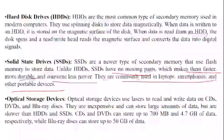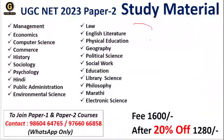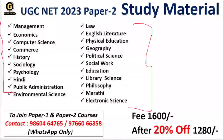Yesterday and today we have completed the full topic of memory — primary and secondary. There are many questions on memory, and we will take MCQs on this. Global Online also provides Paper Two study material for various subjects available on the Global Online app. The fee is Rs. 1600 with a 20% discount, bringing it to Rs. 1280. That's all for today — see you day after tomorrow with a new ICT topic. Thank you everyone.